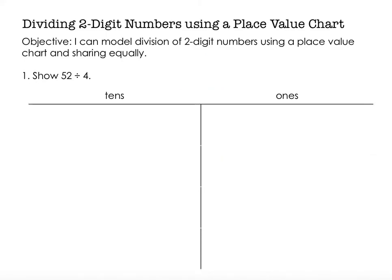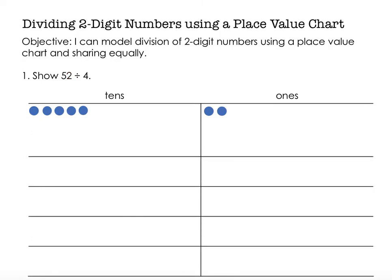So again, like before, I'm going to take 52 and put it in my place value chart. 52 is made up of five tens and two ones. And I'm going to take that and divide it into four equal groups — here are my four compartments for my four equal shares.